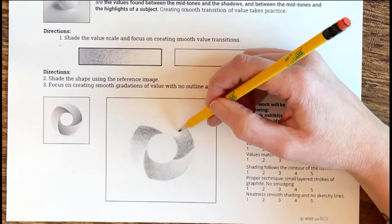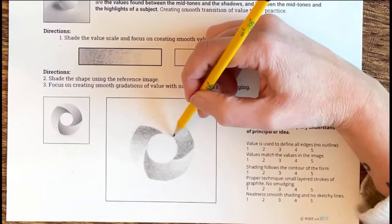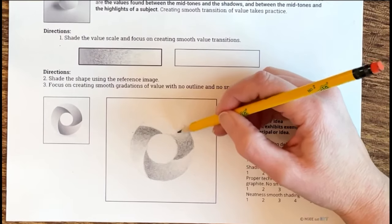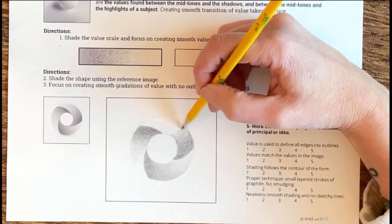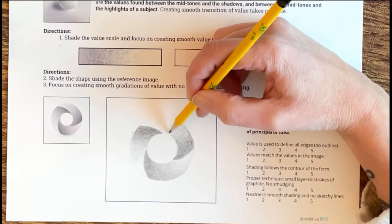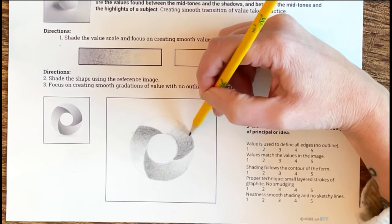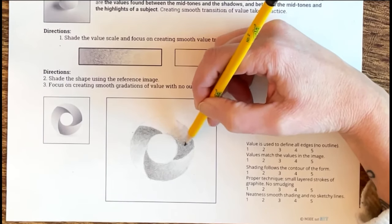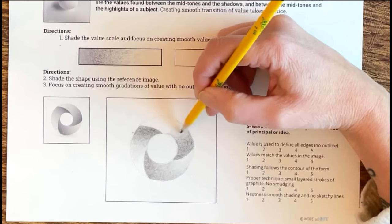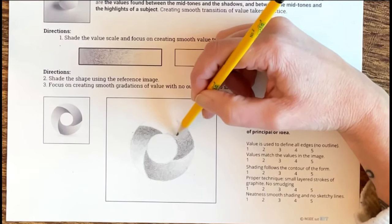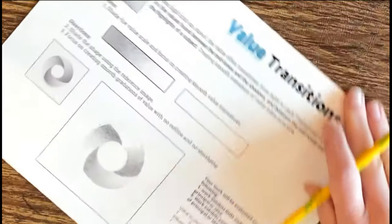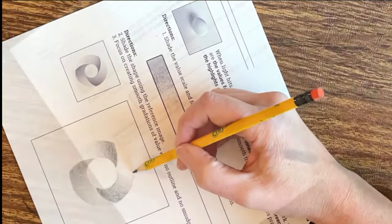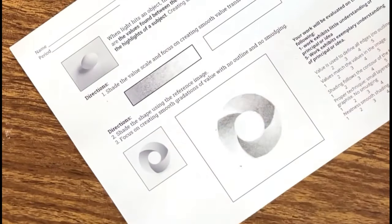When you create value transitions you're really doing all the same exact things that you did when you created flat planes of value. Only now you're just really focusing on the edge between where one value fades into the next and trying to get that transition to fade very smoothly. You're still using short strokes, you're still working in layers, you're still starting with values that are lighter than your reference photo and building up your darks in layers. The only difference is you're focusing on the in-between values and really getting that transition to fade smoothly.